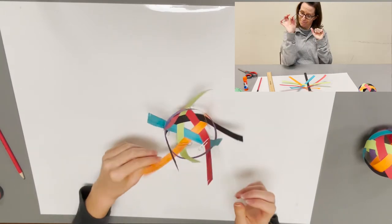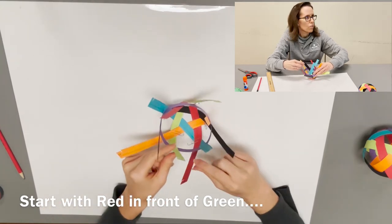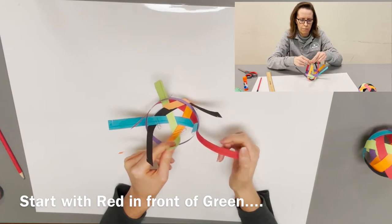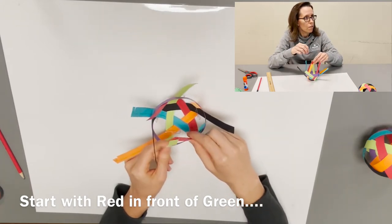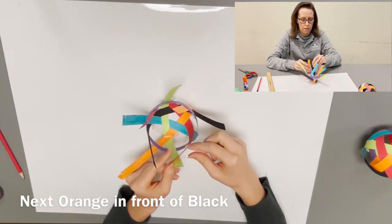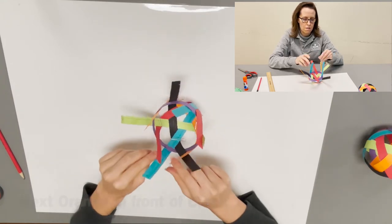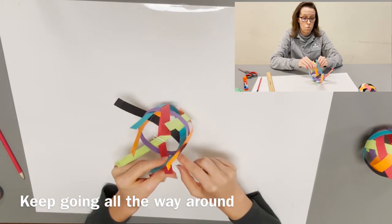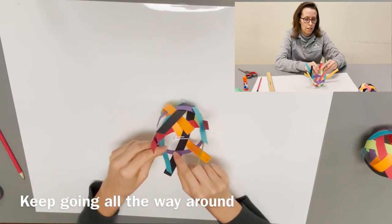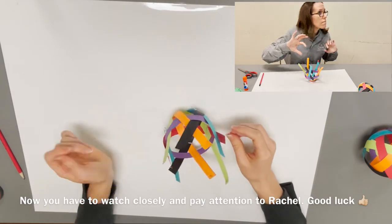So the next step is we're going to cross the piece that's on the outside of the purple circle in front of the one to its left. One, two, three, four, five. And here is where we start putting them together.